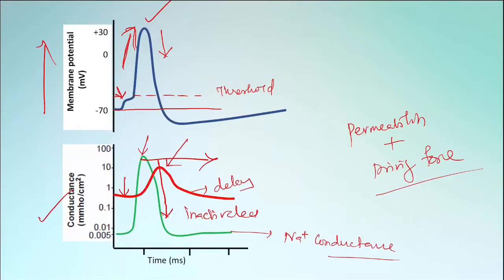The inactivation of potassium channels varies depending upon the type of ion channel. There are non-inactivating, slowly inactivating, and rapidly inactivating types, and the same cell may have more than one type of voltage-gated potassium channel. If they do not inactivate immediately, the conductance of potassium remains more than the baseline, resulting in an after-hyperpolarization in some neurons.